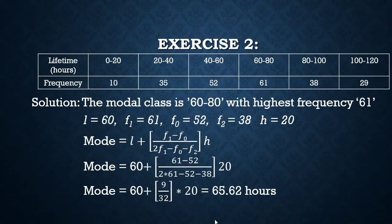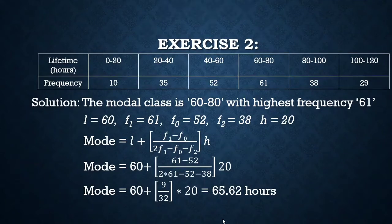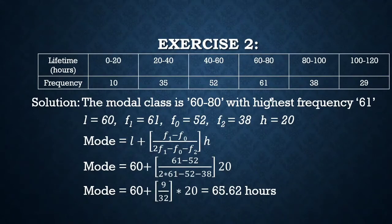Solving this we get the mode to be 65.62 hours. Notice that the mode always lies within the modal class — here the modal class is 60 to 80 and the mode is 65.62, which lies within it. The observation repeating maximum number of times is 65.62.